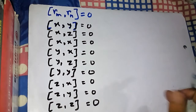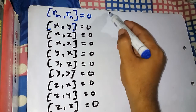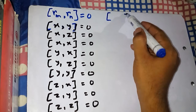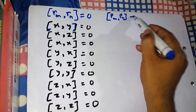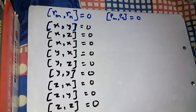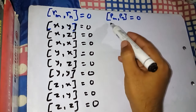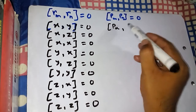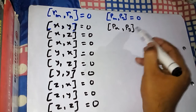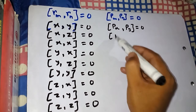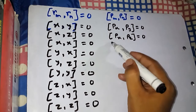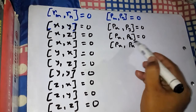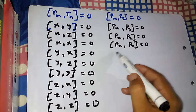The similar thing happens with momentum operators. The commutation relation of two momentum operators is always equal to zero, independent of what components you take. So [px, py] is zero, [px, pz] is zero, and [px, px] is zero.